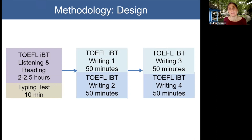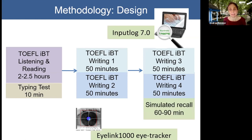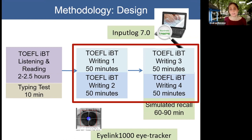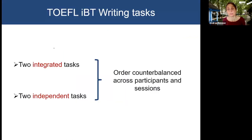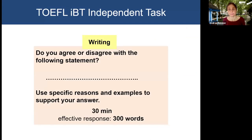We operationalized proficiency as participants' combined reading and listening TOEFL score. Participants first took part in a group session in a computer lab, where they were administered the TOEFL iBT listening and reading components followed by a typing test. Next, two individual sessions followed in our eye-tracking lab. In both sessions participants performed two TOEFL iBT writing tests — four tasks altogether. While writing, we used the keystroke logging software InputLog 7 to track their keystrokes, and eye movements were recorded by an EyeLink 1000 eye tracker, which is a much more sophisticated instrument than we used in our previous research. Finally, participants engaged in a stimulated recall session.